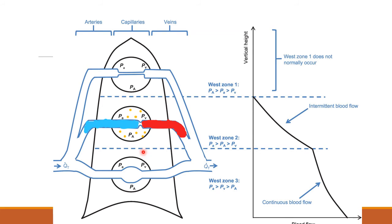This is Zone 2. Here the pulmonary artery pressure is higher than the alveolar pressure, and because of this there is intermittent blood flow. Normally, blood flow in any vessel depends upon the difference between the artery and the vein. But here in Zone 2, the blood flow depends upon the difference between the artery and the alveolus.